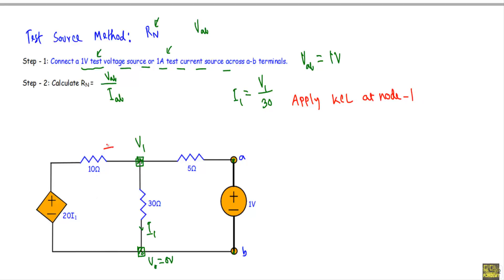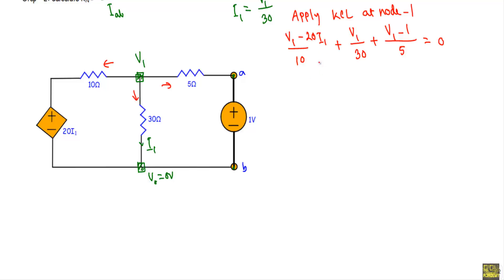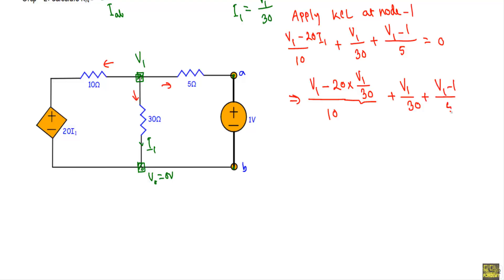Applying KCL at node 1, with all currents outgoing, I get: (V1 − 20i1) / 10 + V1 / 30 + (V1 − 1) / 5 = 0. Substituting i1 = V1 / 30, this becomes: (V1 − 20·(V1/30)) / 10 + V1 / 30 + (V1 − 1) / 5 = 0.